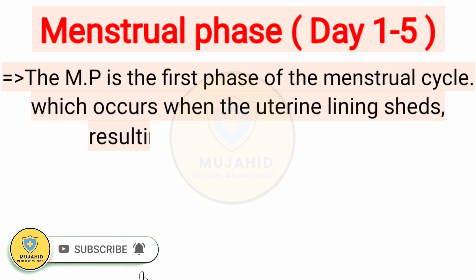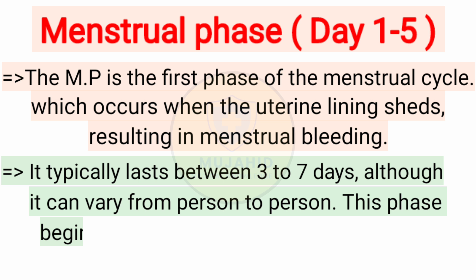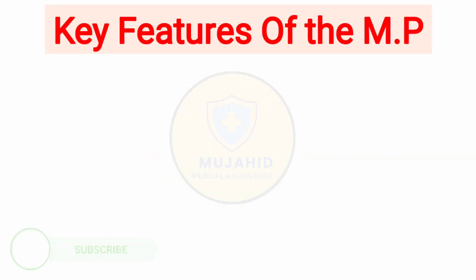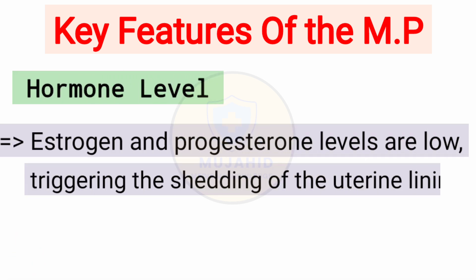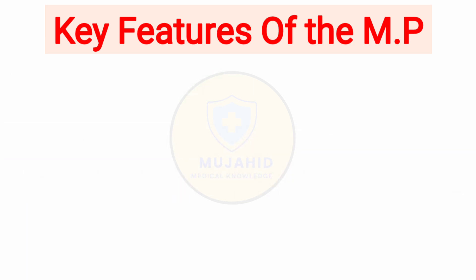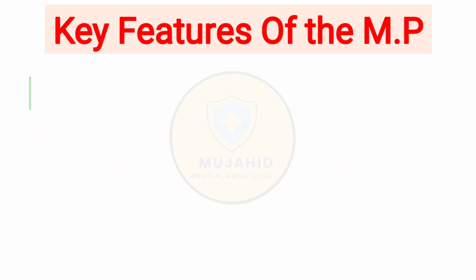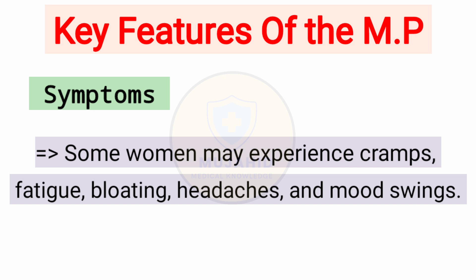The menstrual phase, Day 1 to 5, is the first phase of the menstrual cycle, which occurs when the uterine lining sheds, resulting in menstrual bleeding. It typically lasts between three to seven days. Key features: hormone levels — estrogen and progesterone levels are low, triggering the shedding of the uterine lining. Symptoms include cramps, fatigue, bloating, headaches, and mood swings during this phase.